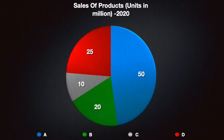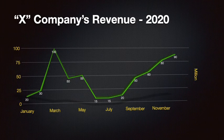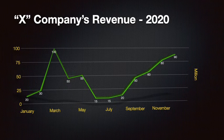This line graph shows X company's revenue over the course of the year. The first three months show steady increase in revenue, however you can see a sharp drop in the next three months.